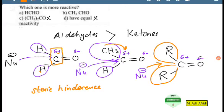Jabke ketone mein, jo carbon hai wo do alkyl groups ke saath bonded hai. To yahan pe zyada electron donation dono taraf se ho rahi hai.